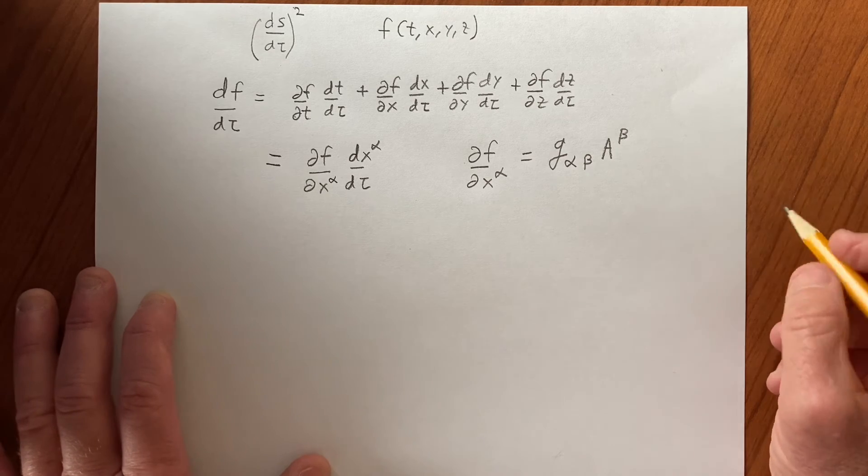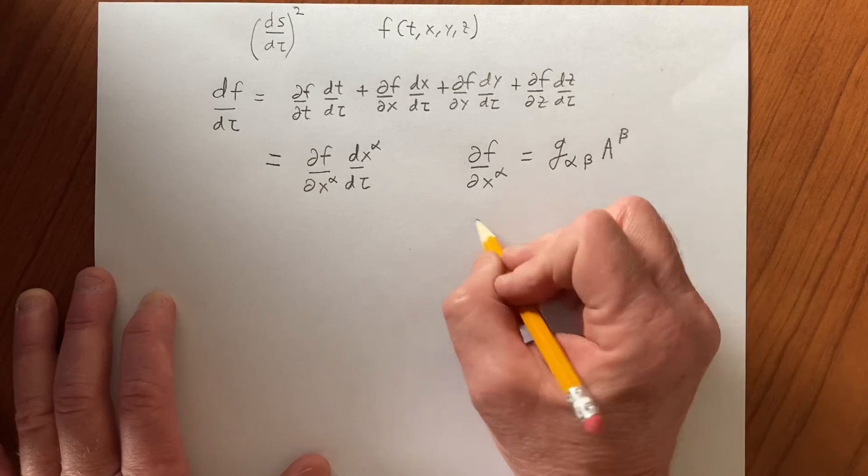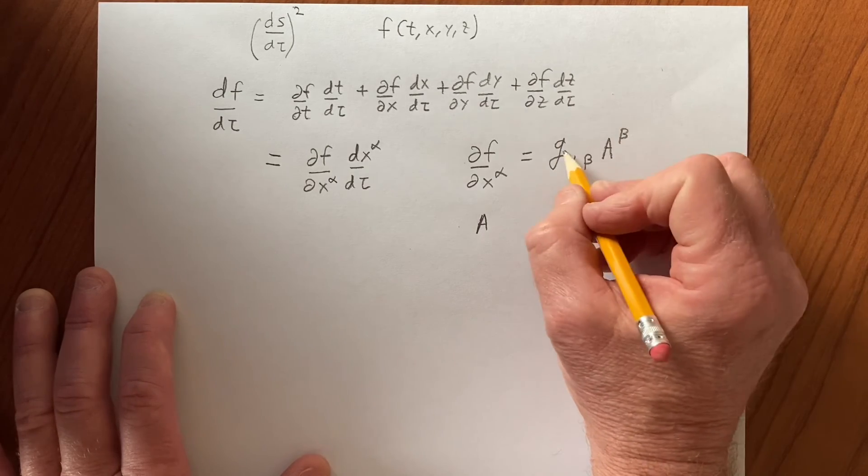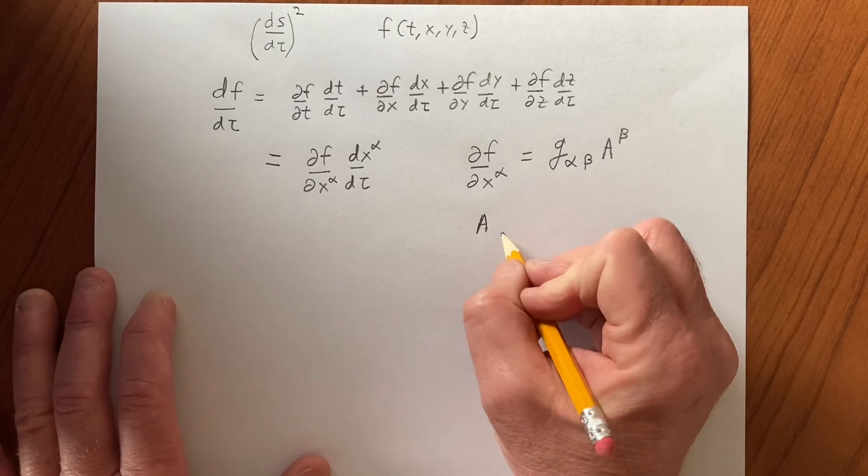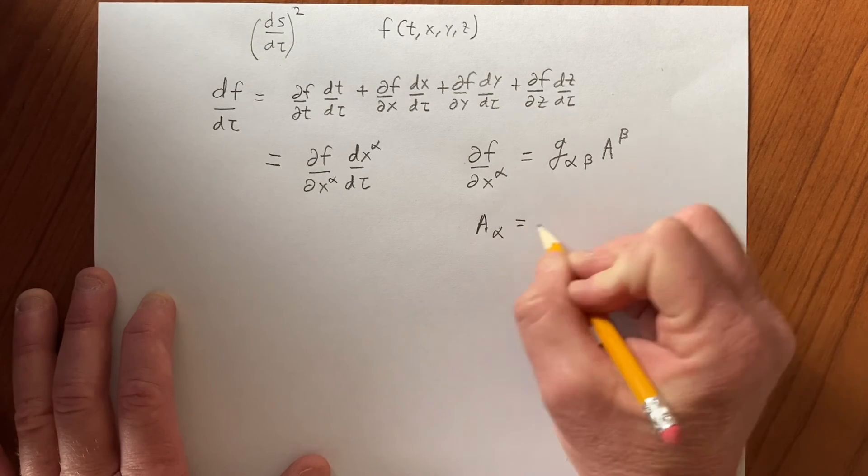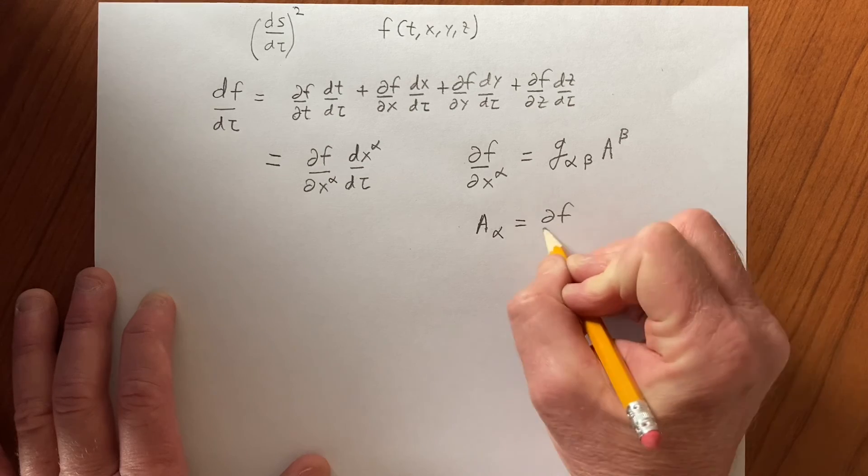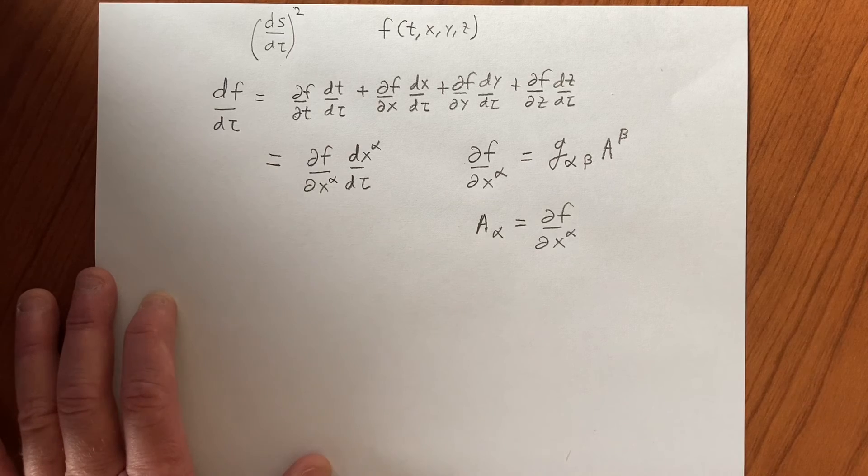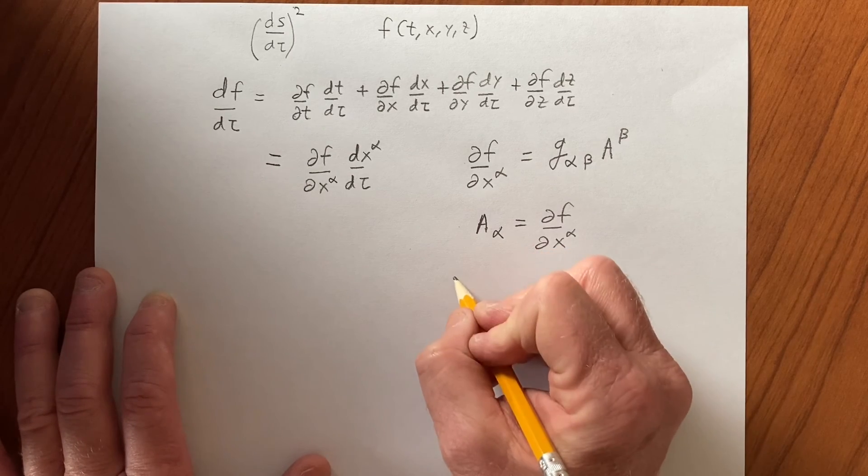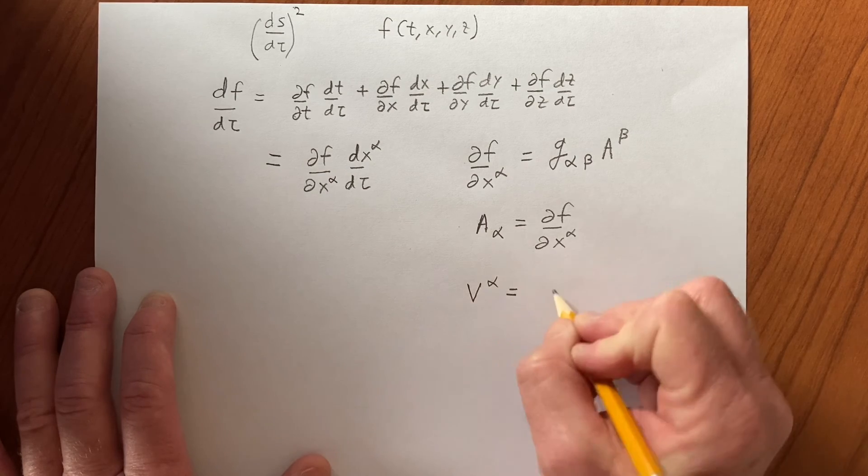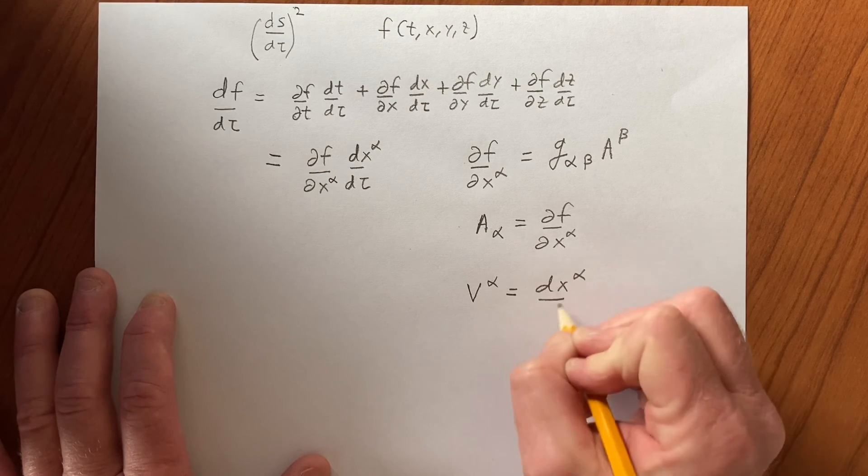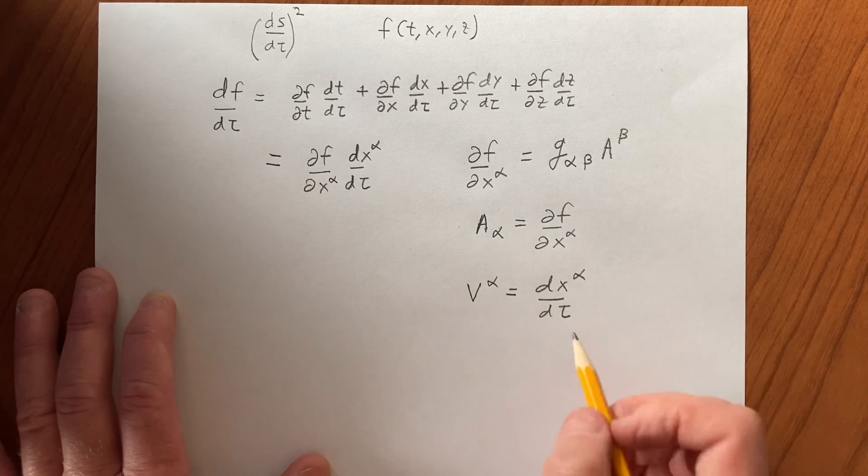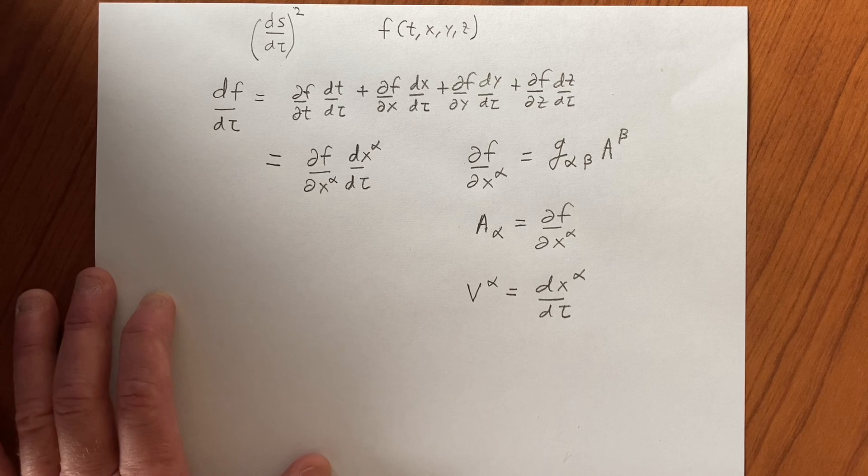So an A that experiences this interaction with the metric gives A_α, that's this object here, whose components are clearly different than the components of a four-vector, where the four-vector in this case is a velocity. So v^α is dx^α/dτ, and therefore we see the same structures here as well.